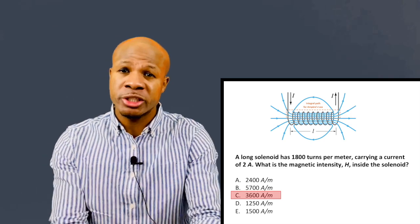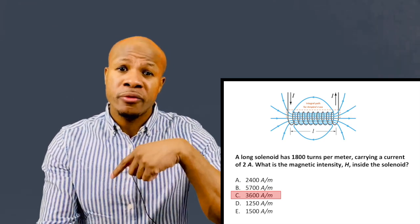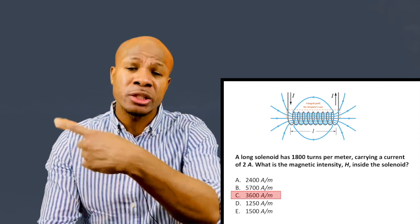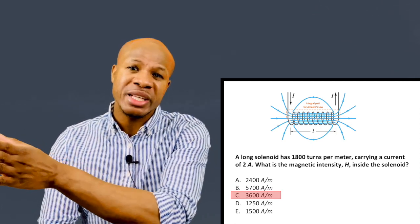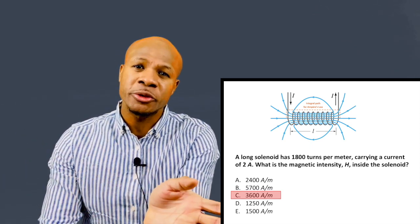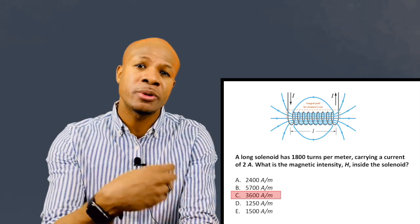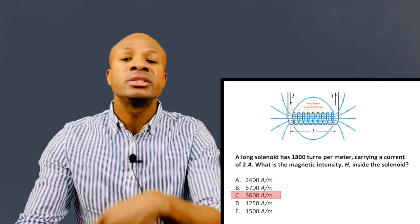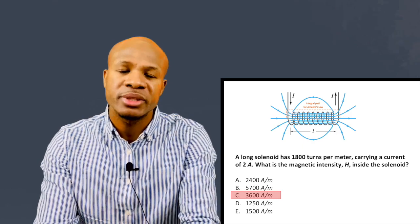So from this question, we just learned that when you have a current moving around in the circle around the solenoid, it develops a uniform magnetic field within the solenoid. And we just multiply the current passing through the wire times the number of turns per meter. And that's magnetic intensity. So let's move on to question number two.